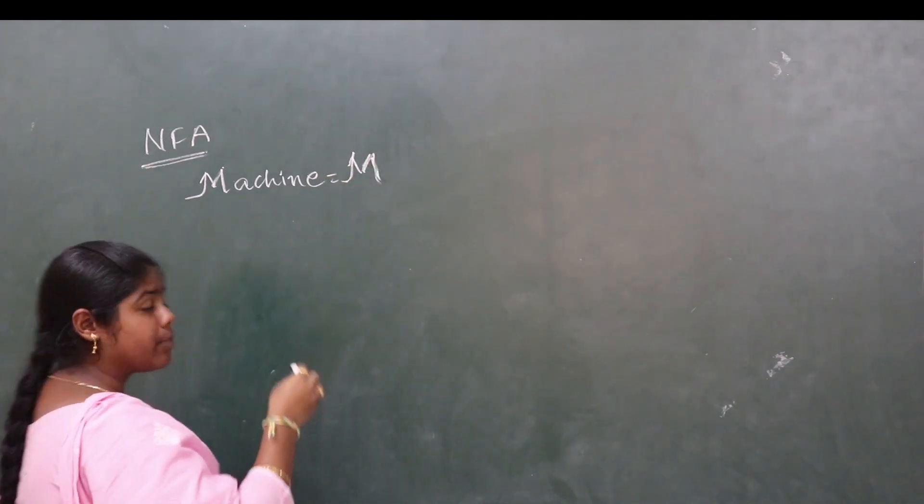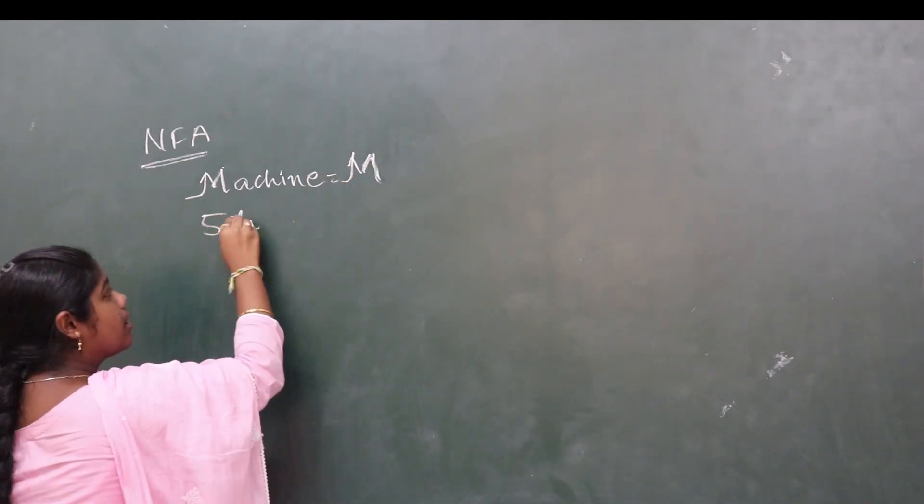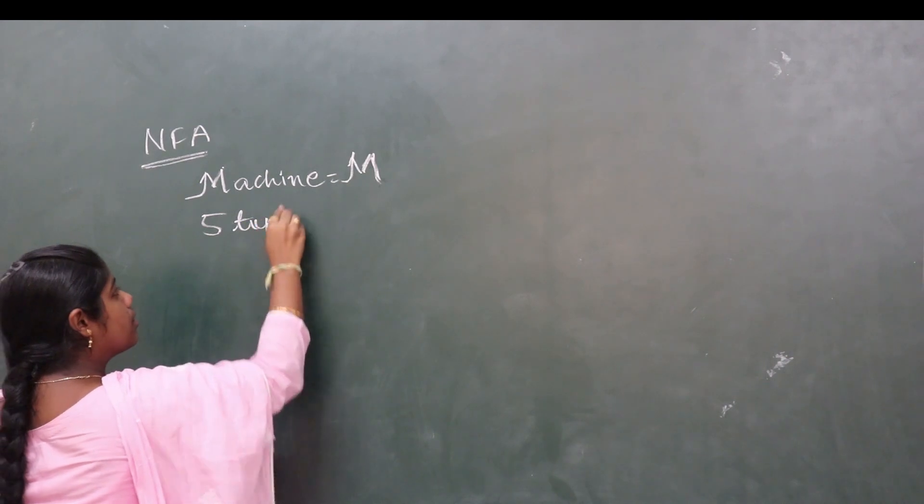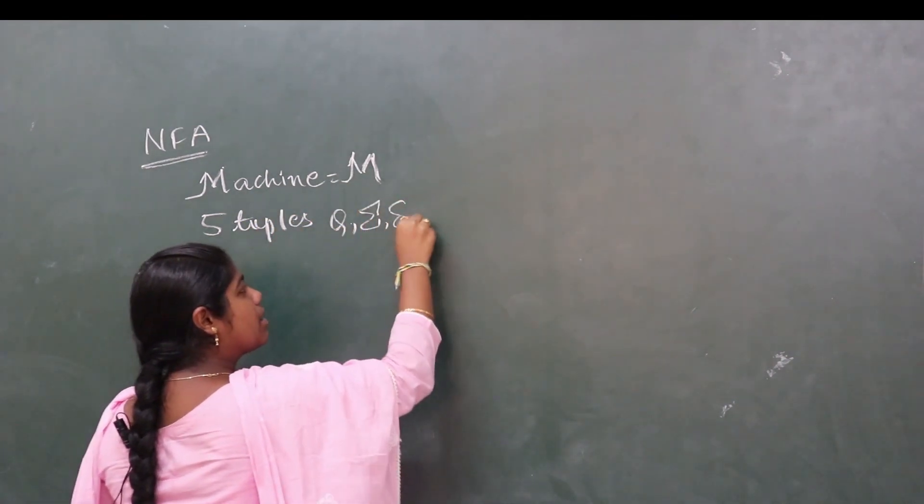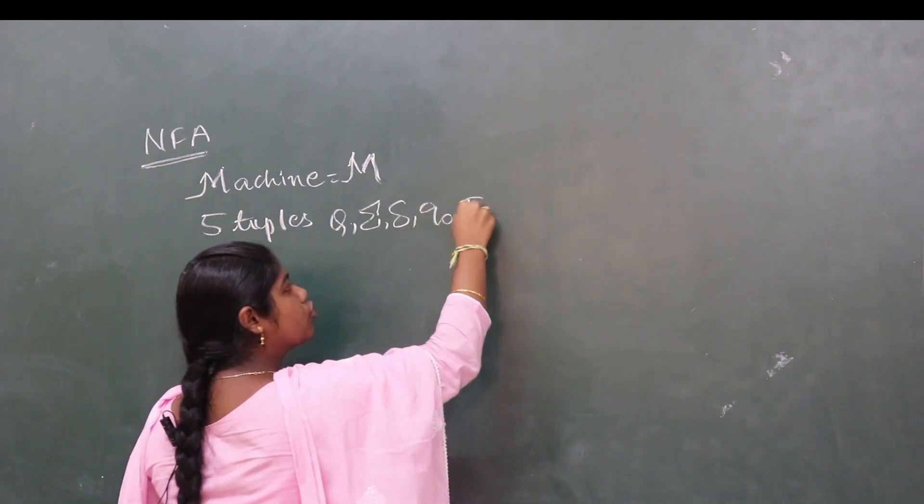It is defined using 5-tuples: Q, sigma, delta, Q0, and F.